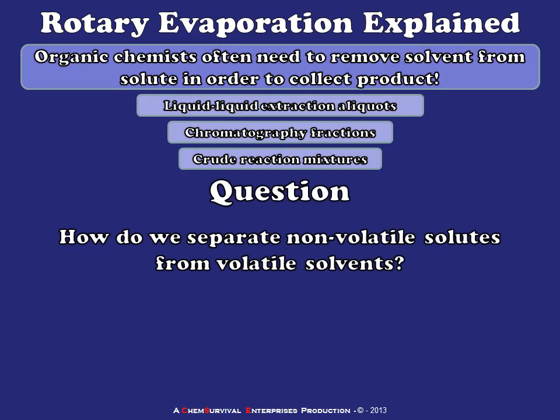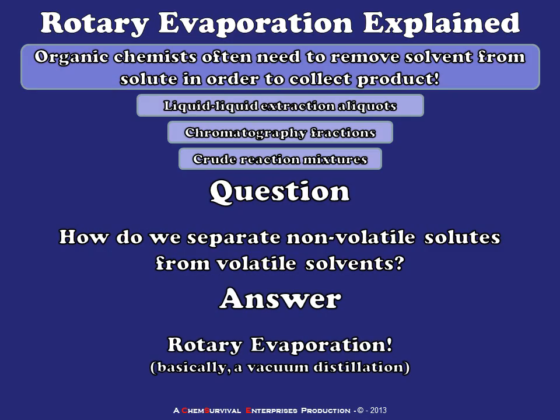So the question today is: how do we separate non-volatile solutes from volatile solvents? And the answer is rotary evaporation, which is basically a fancy type of distillation. Let's think about what a rotary evaporator is and how it works, and then we'll watch one in action at the very end.